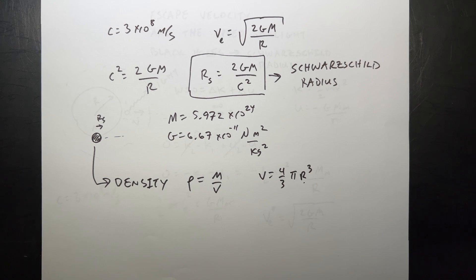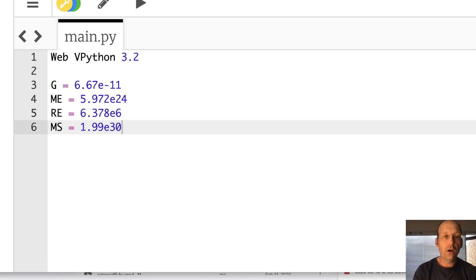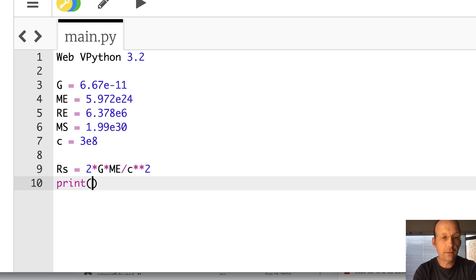And remember, this is just for fun. It will be on the test. No, I'm kidding. I'm kidding. It's not on the test. Okay, so I have G, I have the mass of the Earth, radius of the Earth. I don't need that. The mass of the sun. Let's go ahead and calculate the speed of light. C is 3 times 10 to the 8th. So R_s is going to be equal to 2 times G times the mass of the Earth divided by c squared. Let's print that. R_s equals R_s. And that's in meters. Let's just see what it says.